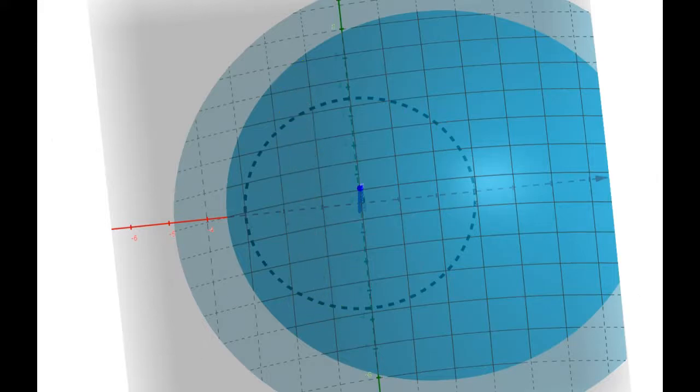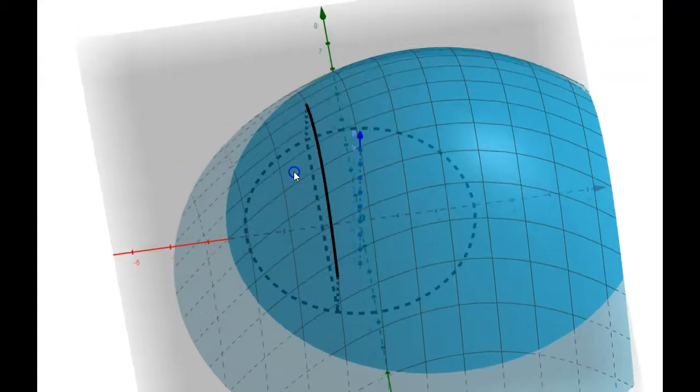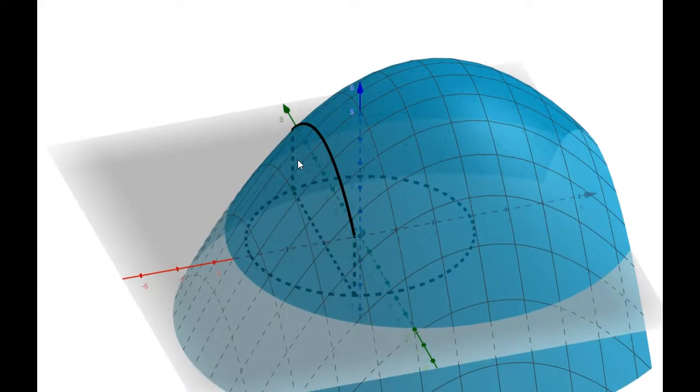So the limits of integration for Y—all right, so X is going from negative 3 to 3, but the Y values are going from some function of X to some other function of X.